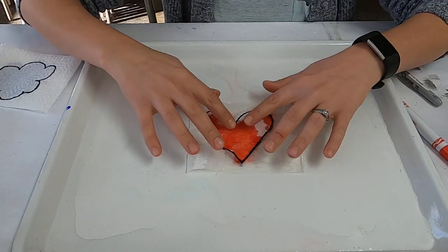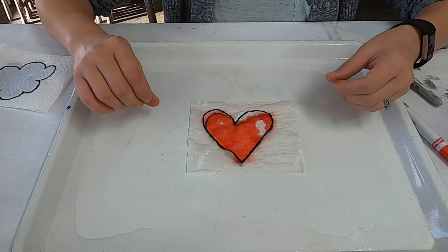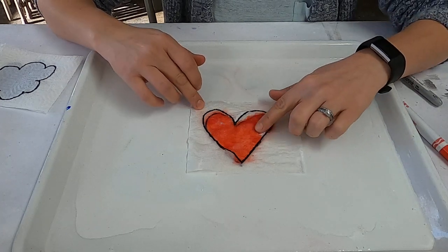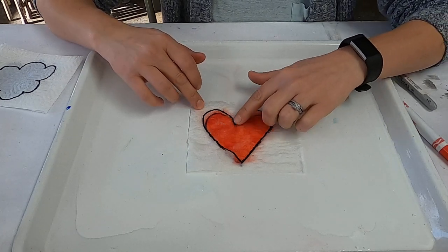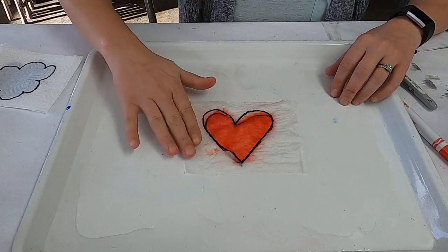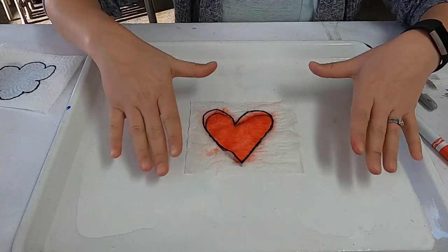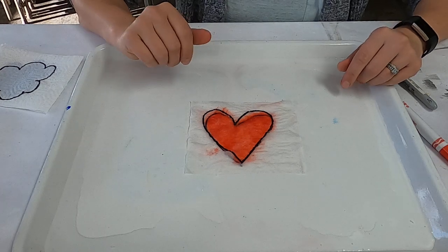You see, now it's starting to go, as it soaks up all that water, then it reveals your color below. So it's a little bit easier if you have a tray that's flat. But that is another way to do it.